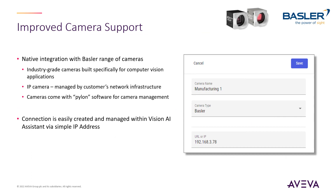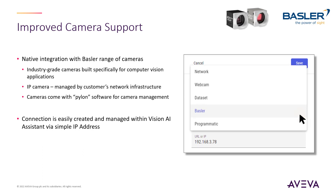Vision AI Assistant 2021 R2 includes native support for the Basler range of cameras. These cameras are industry-grade with a long support lifecycle, specifically built for computer vision applications. They are IP cameras that can be managed like any other network-connected device, coming with their own Pylon software for camera management. Connection to Basler cameras within Vision AI Assistant is established via a simple IP address.